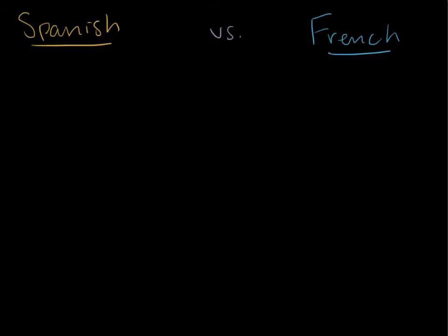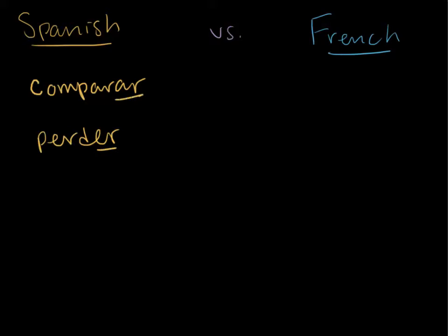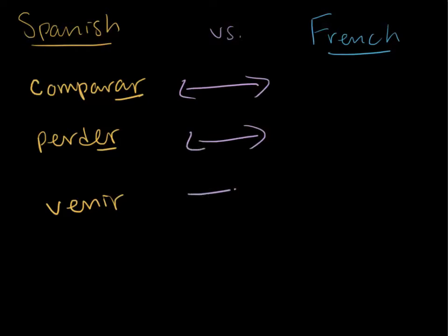In Spanish there are three categories of verbs. There are AR verbs like the verb 'comparar' meaning to compare, ER verbs like the verb 'perder' meaning to lose, and IR verbs like the verb 'venir'.